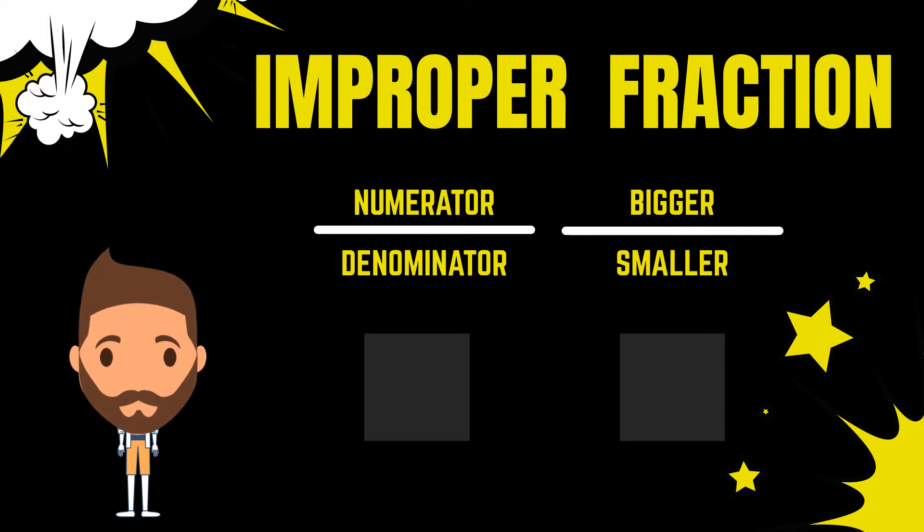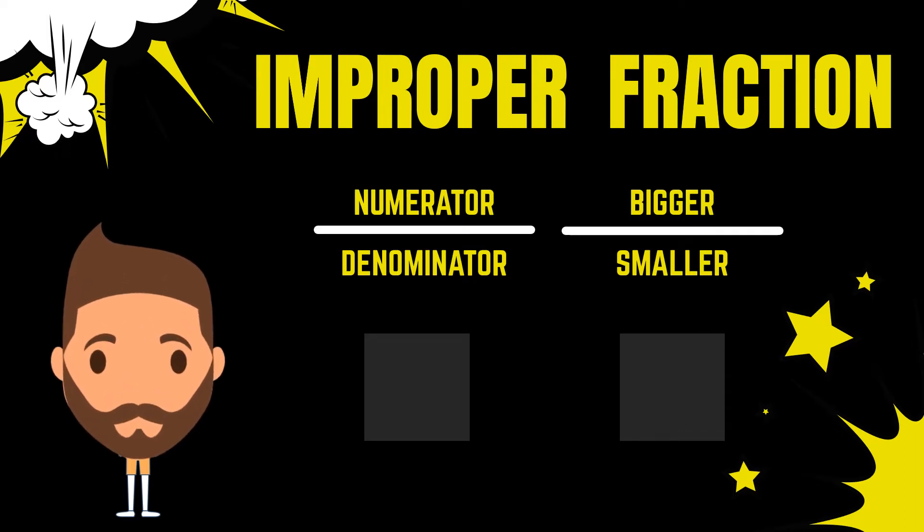Improper fractions are like the improper appearance of this young gentleman where his head, or the numerator, is bigger than the rest of his body. With improper fractions, our numerator has the greater value and our denominator now has the lesser or smaller value. Examples of this could be anything where we have 8 over 7 or 100 over 2. Both of these are improper fractions because their numerator is bigger than the denominator.